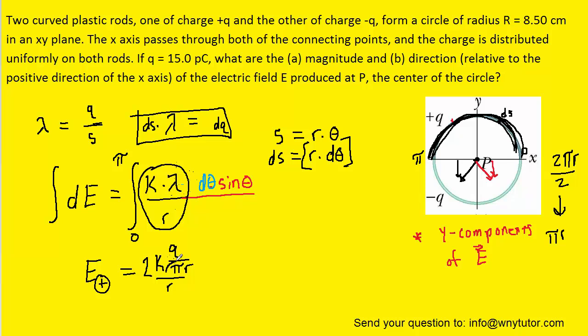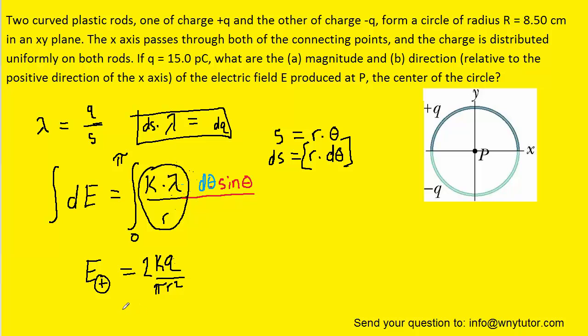And then a little bit of algebra here. Push that pi r down to the denominator to make pi r squared. And we finally have the expression for the electric field, but that's only of the positive charge.